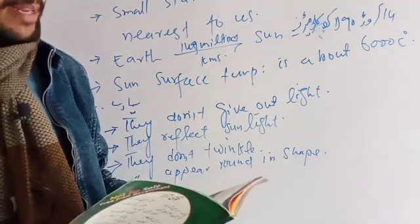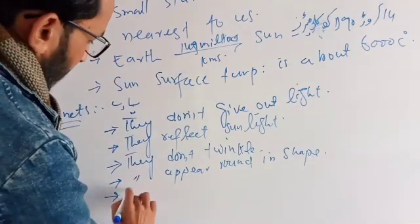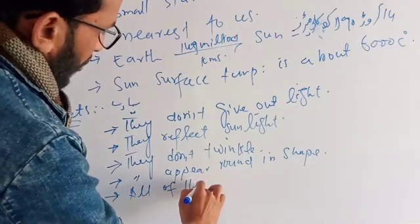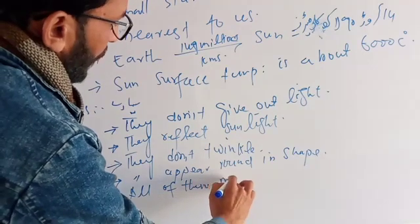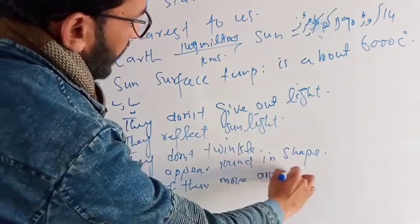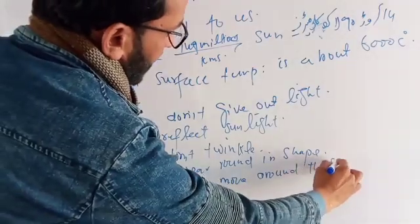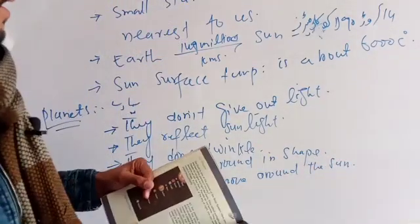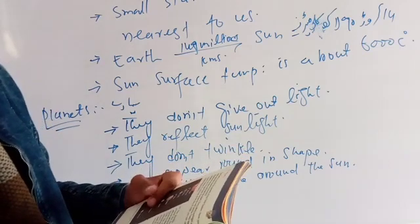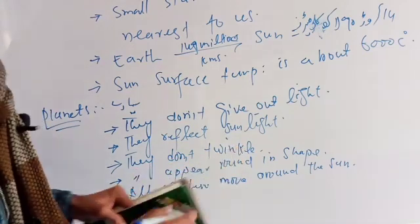All the planets move around the sun. The path on which a planet moves is called its orbit.